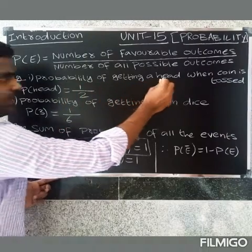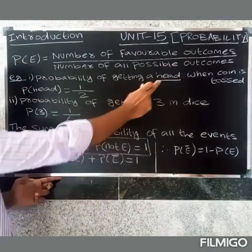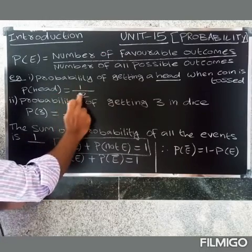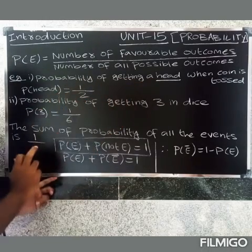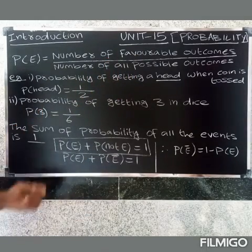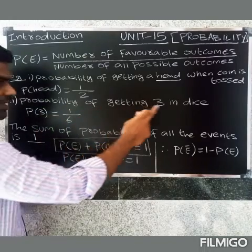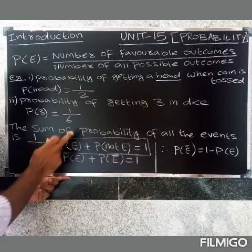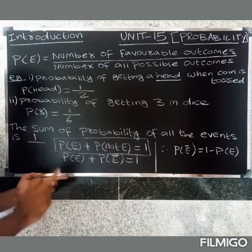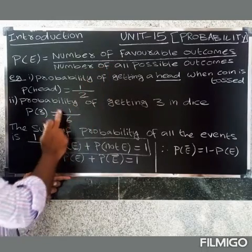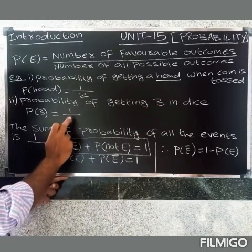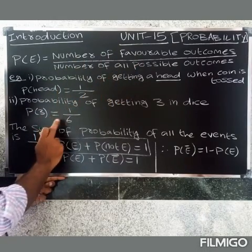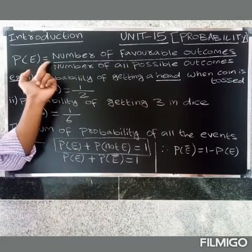On a dice there are six numbers: one, two, three, four, five, six. So the total number of possible outcomes is six. The probability of getting a three on a dice: number of favorable outcomes is one, total possible outcomes is six, so P(3) = 1/6.